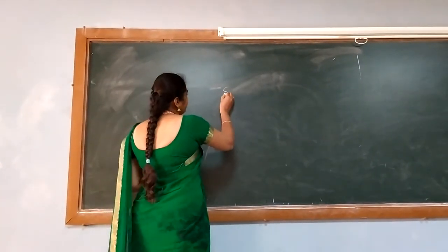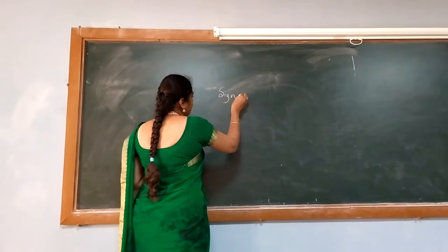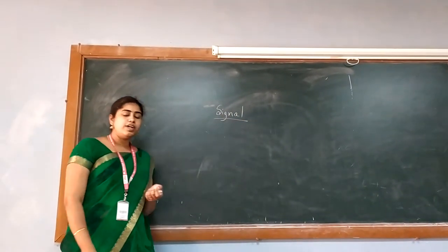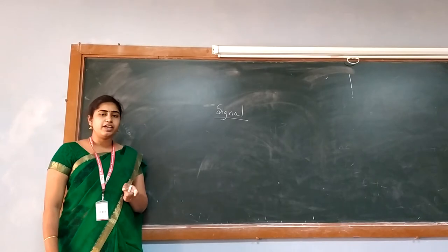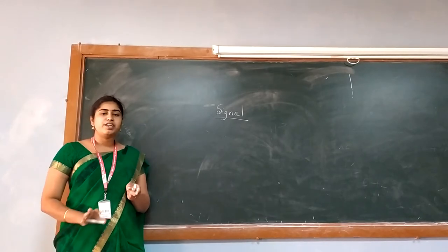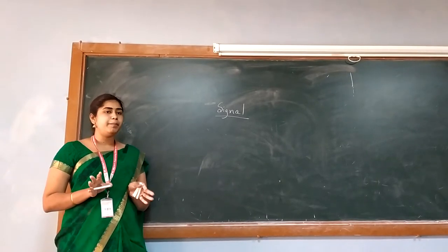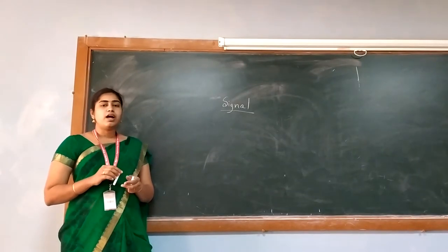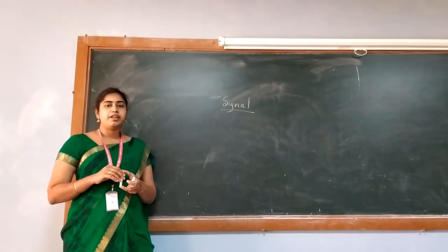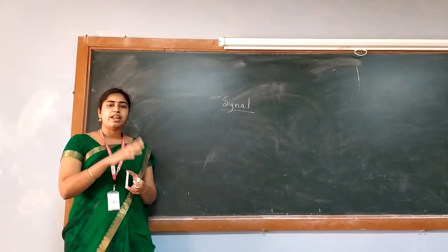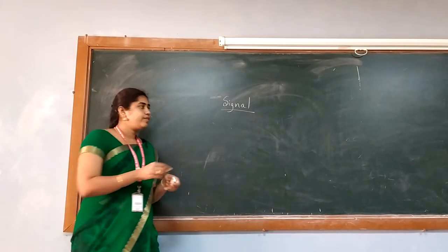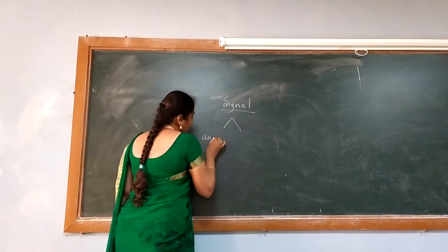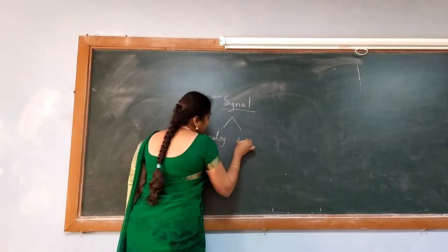Before going into the classification of signal, let me explain what is meant by a signal. A signal is a physical quantity which varies with respect to one or more independent variables. Signals are of two types available in our nature: analog and digital.